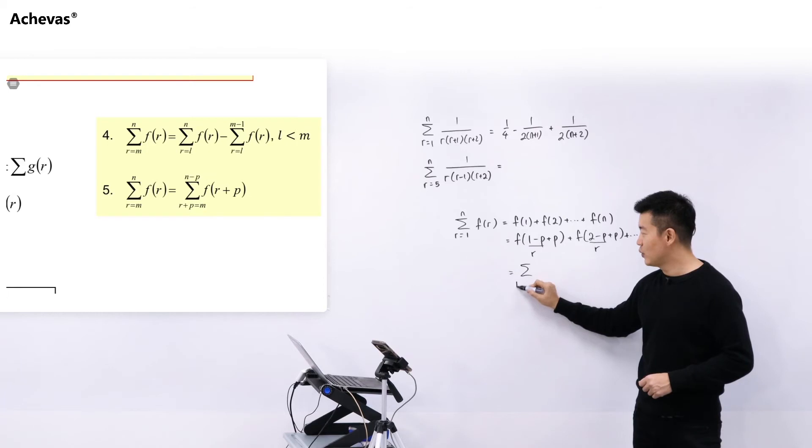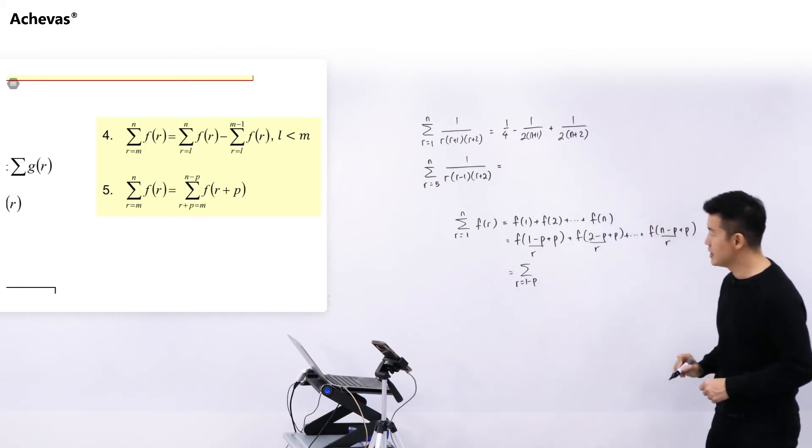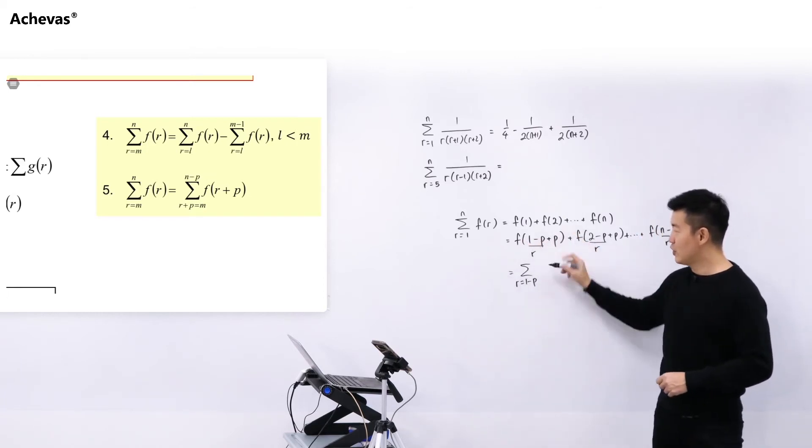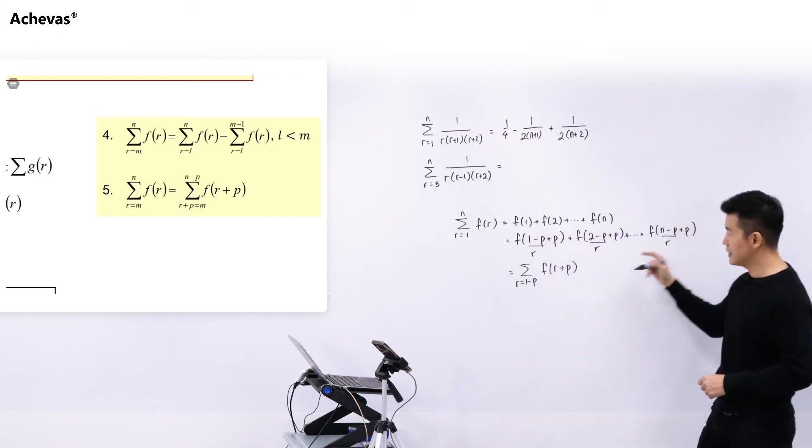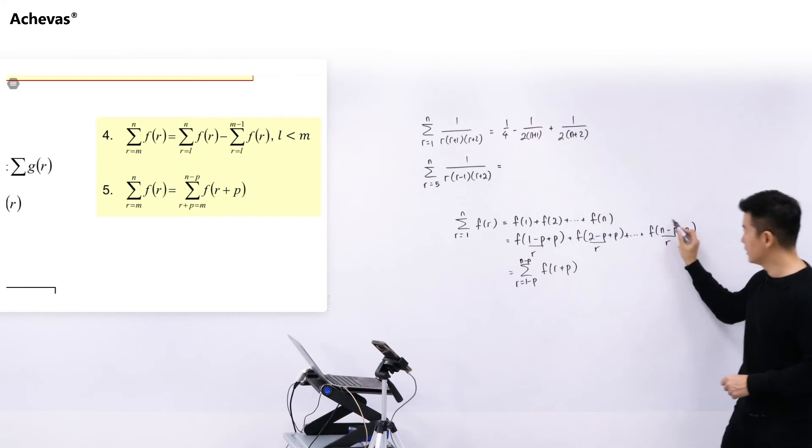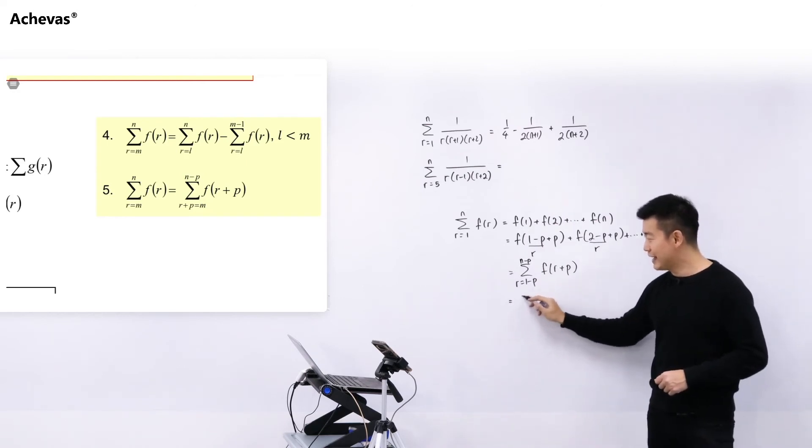We can re-express this into the sigma notation where R starts from 1 minus P, and it is for F of R plus P, because this is now the variable R, and all the way until the very last R is N minus P, the very last R.